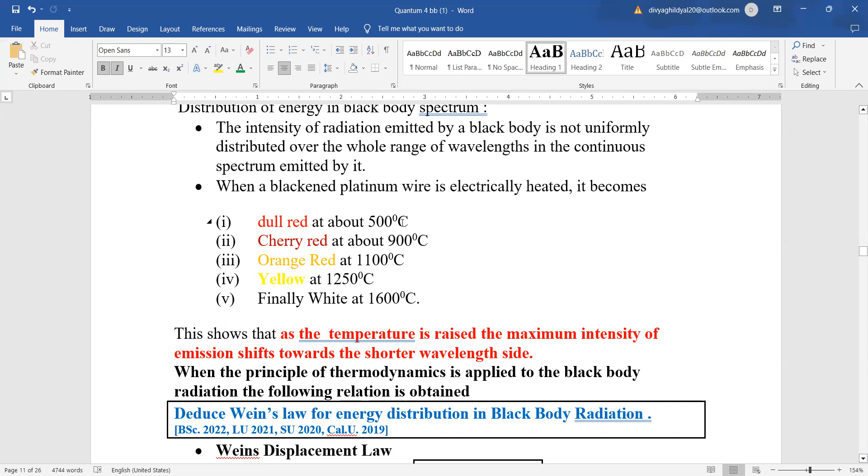So this variation in color that is the wavelength, because red is having a different color wavelength, cherry red has a different color wavelength, yellow has a different color wavelength along with temperature. That means as you raise the temperature, the emission shifted towards the shorter wavelength side. This is what the black body radiation spectra follows.